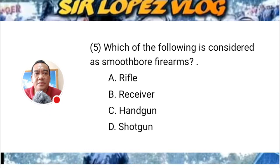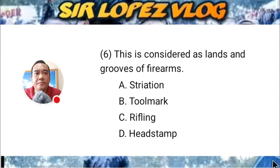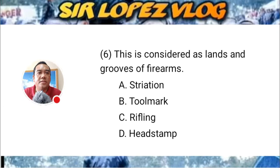Question number six: This is considered as lands and grooves of a firearm. A) striation mark, B) tool mark, C) rifling mark, or D) headstamp mark?